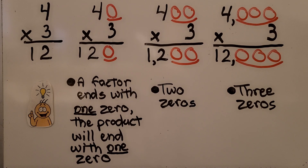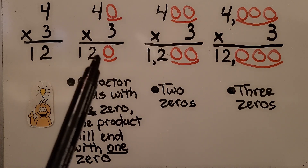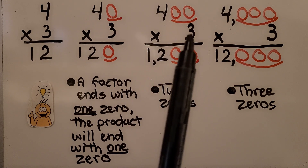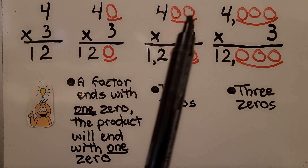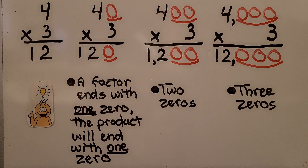So take a look at what I've done here. We have our basic multiplication fact of 4 times 3, which is equal to 12. If we multiply 40 times 3, there's one zero here — we have 12 with a zero, that's 120. If we multiply 400 times 3, we still have our 4 times 3 which is 12, but now we have two zeros in the product — it's 1,200.